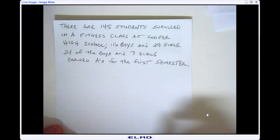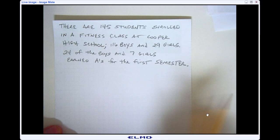Here's a second example of going from a word problem to a relative frequency table and two-way table. First off, there are 145 students enrolled in a fitness class at Cooper High School. 116 boys and 29 girls. 24 of the boys and 7 of the girls earned A's for the first semester.